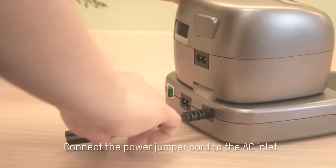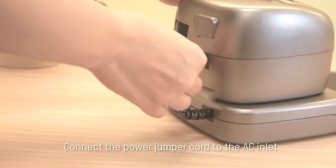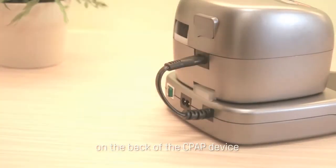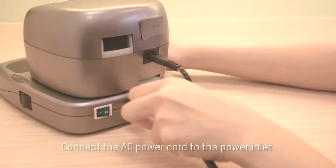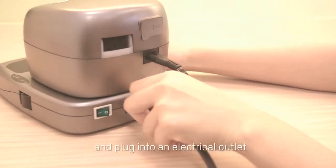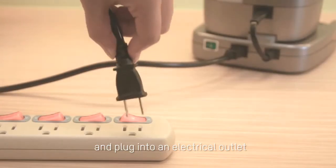Connect the power jumper cord to the AC inlet on the back of the CPAP device. Connect the AC power cord to the power inlet on the back of the heater and plug into an electrical outlet.